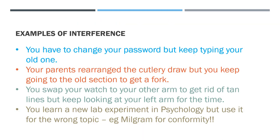So today's topic is interference. Examples include how you change your password on your computer but keep typing in your old one. Or your parents rearrange the cutlery drawer but you keep going to the old section for a fork. You swap your watch to the other arm but keep looking at your left arm for the time. Or you learn a new lab experiment in psychology but use it for the wrong topic — for example using Milgram for conformity, when Milgram is obedience. These are all examples of interference where either new information has interfered with old, or old information is interfering with new.